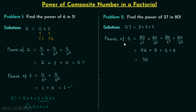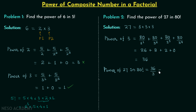So 36 is the highest power of prime number 3 in 80 factorial. To find the highest power of 27 in 80 factorial, we divide 36 by 3, because we have three 3s in 27. This gives us 12. The highest power of 27 in 80 factorial is 12.